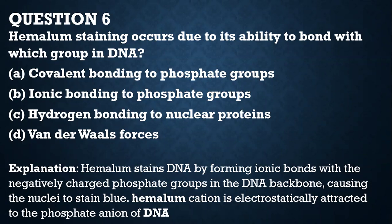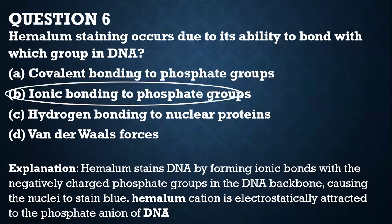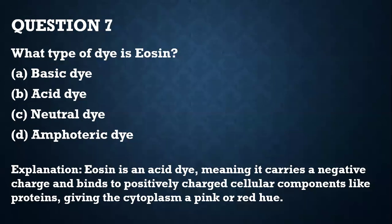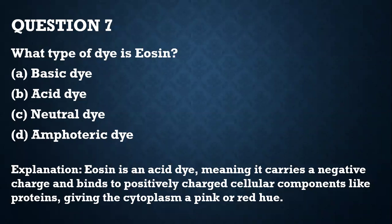Question 6. Hematoxylin staining occurs due to its ability to bond with which group in DNA? It has the ability to form ionic bonds with phosphate groups in the DNA. Question 7. What type of dye is eosin? Eosin is an acid dye, meaning it carries a negative charge and binds to positively charged cellular components like proteins, giving the cytoplasm a pink or red hue.